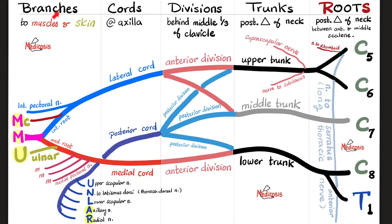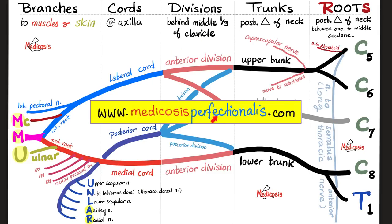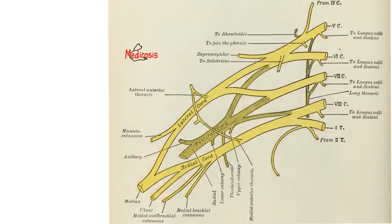Today we'll focus on the branches. The median nerve has a lateral root from the lateral cord and a medial root from the medial cord. The lateral cord came from the union of the anterior division of the upper trunk with the anterior division of the middle trunk. The medial cord came from the anterior division of the lower trunk. The posterior divisions of all trunks united to give the posterior cord. The musculocutaneous nerve supplies the biceps; the radial nerve supplies the triceps.